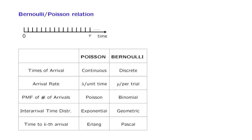Let us now take stock and summarize what we have done for these two processes, the Bernoulli and the Poisson process, and their relation. The Poisson process runs in continuous time, whereas for the Bernoulli process, time is discrete and is divided into slots.